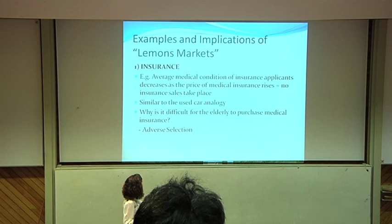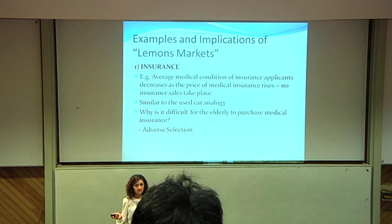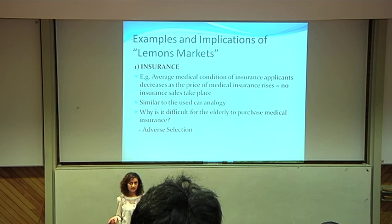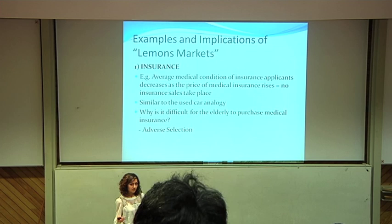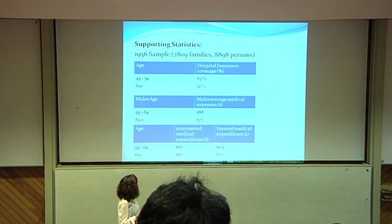Some examples and implications Akerlof uses to show the lemons market include insurance. In a medical insurance example, the average medical condition of insurance applicants decreases as the price increases because no insurance sales will take place. This is similar to how the average quality of the car decreases as the price increases in the used car analogy. It's difficult for elderly people to purchase insurance because people over 65 will find the premiums too high. So only the most pessimistic people will purchase insurance at this price. This is adverse selection again.